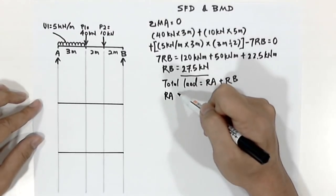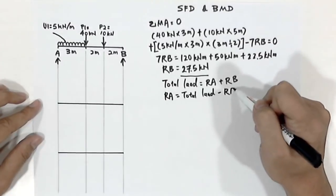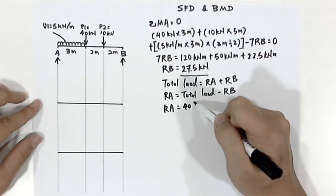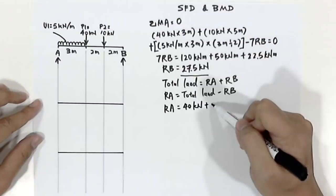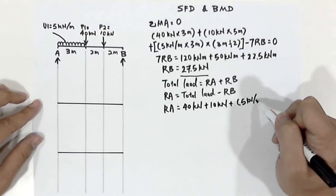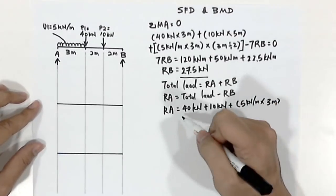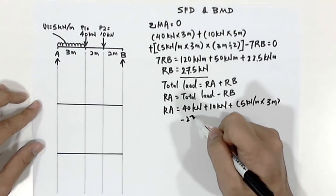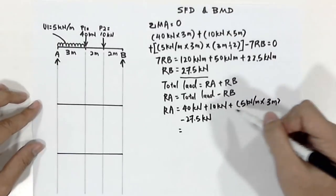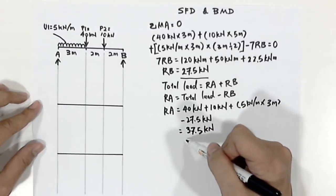From this formula we can find Ra by using the total load to deduct Rb. Therefore Ra equals 40 kilonewtons plus 10 kilonewtons plus 5 kilonewtons per meter times 3 meters, then minus Rb which is 27.5 kilonewtons. If we solve this calculation, what we'll get is 37.5 kilonewtons. So this is our Ra.